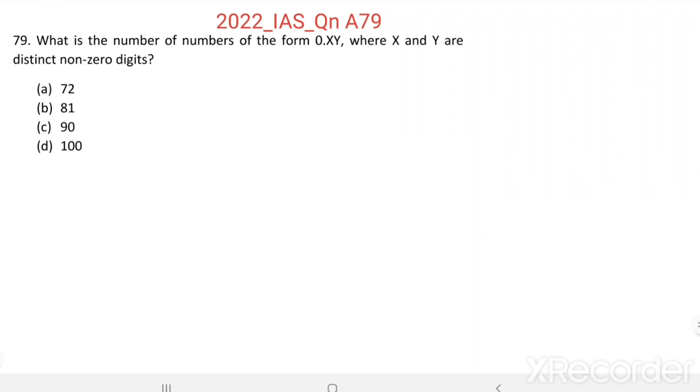Question number 79. What is the number of numbers of the form 0.xy, where x and y are distinct non-zero digits?